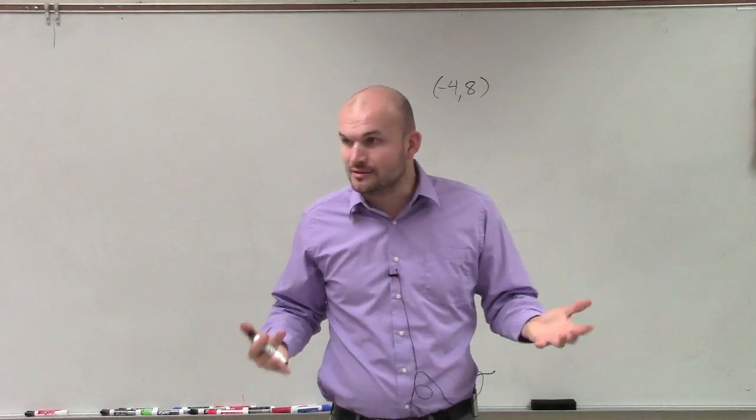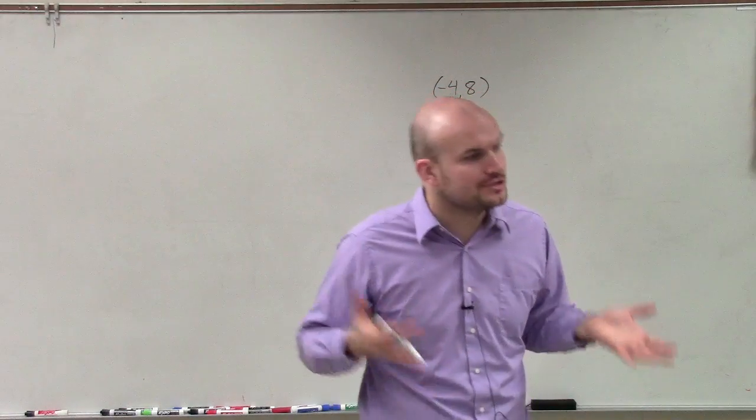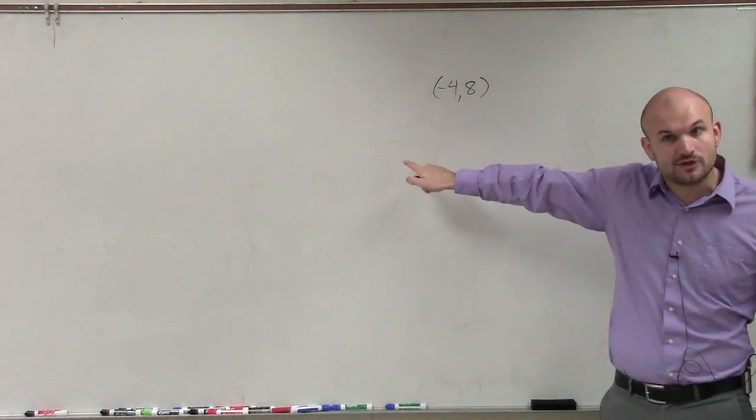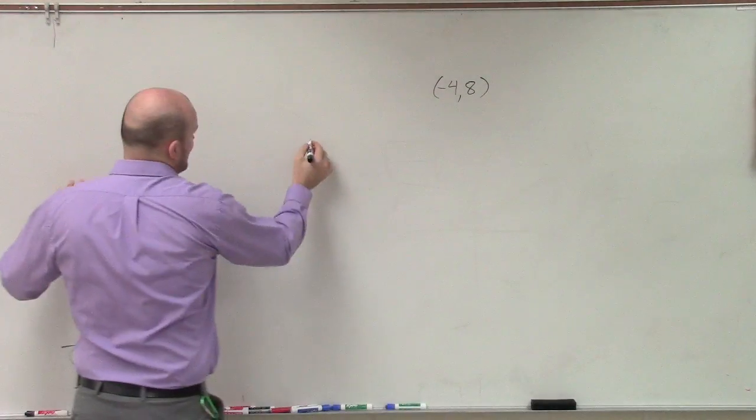Last problem we created a triangle, right? We used that with the constraint and the value of sine to create a triangle. In this one, negative 4, 8 is not on the unit circle, right? Because the unit circle has a radius of 1. So again, we have to create a triangle.